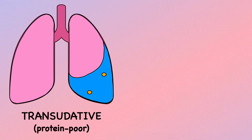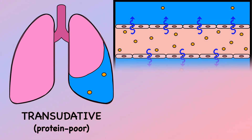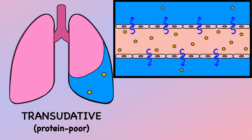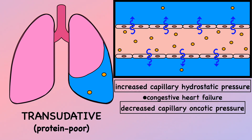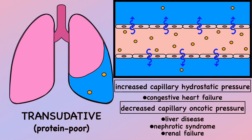In transudative pleural effusion, the physiopathological mechanism is either increased capillary hydrostatic pressure — when the cause is congestive heart failure — or decreased capillary oncotic pressure caused by low serum proteins, as a consequence of liver disease, nephrotic syndrome, or renal failure.